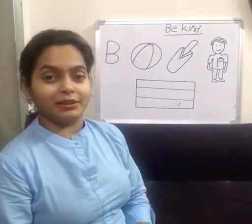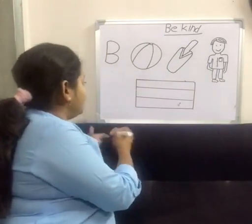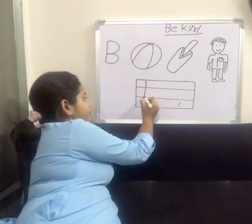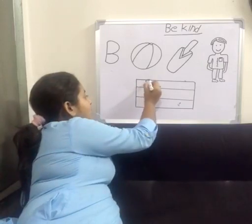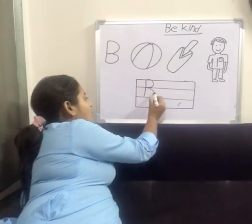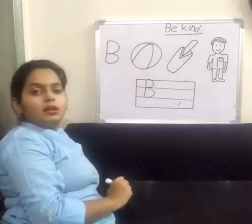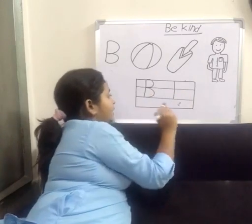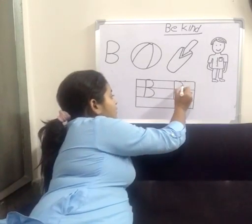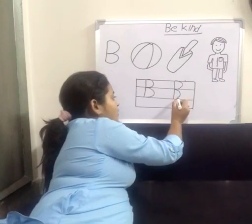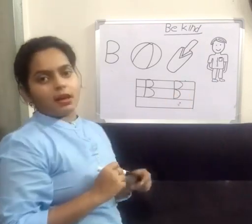Now we are going to learn its formation — how we are going to make a B. Firstly we have to draw one standing line, then make a small curve like this, and one more curve like this. Let's do it again: one standing line, one curve, one small curve, and one more small curve.